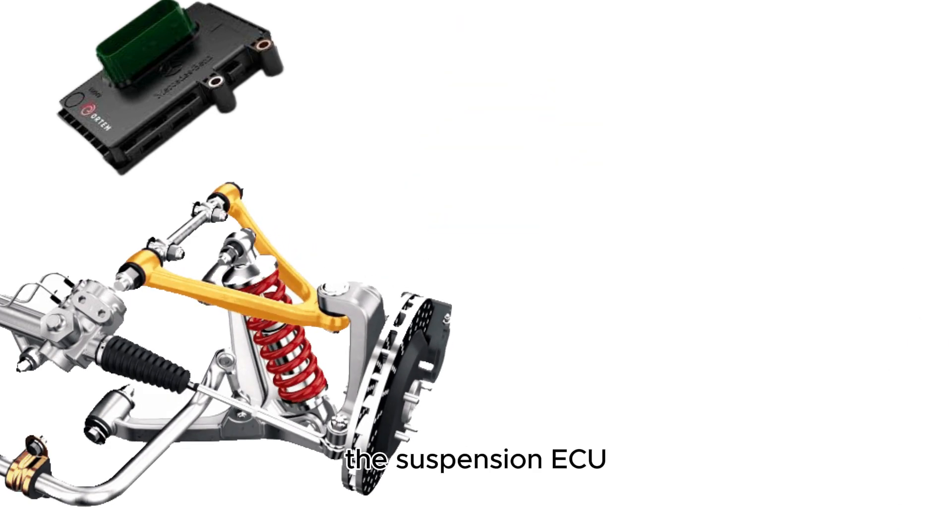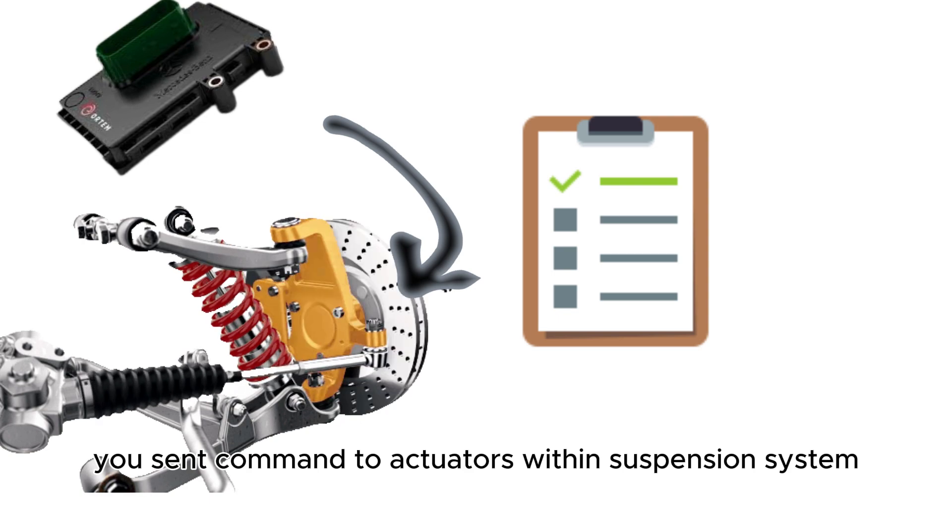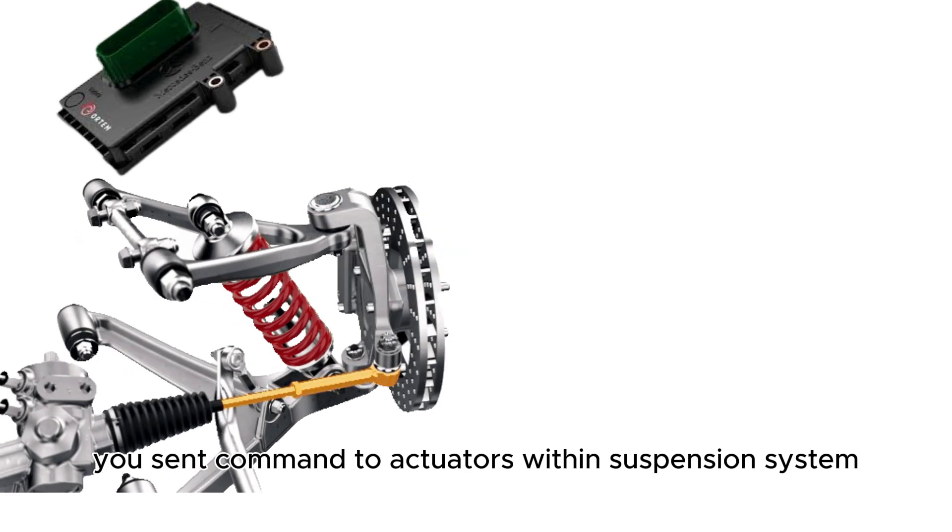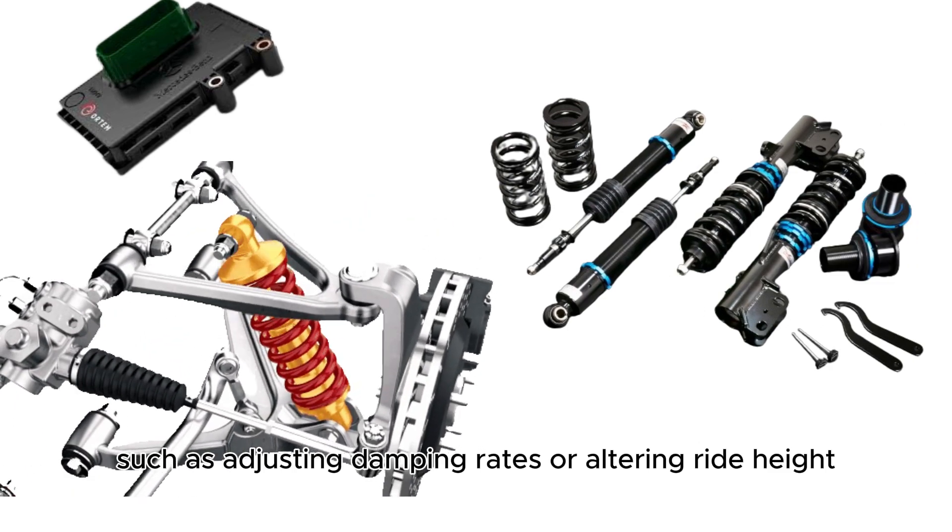the suspension CU sends commands to actuators within the suspension system, such as adjusting damper rate or altering ride height.